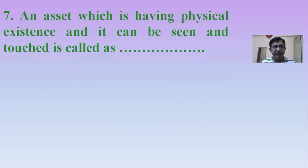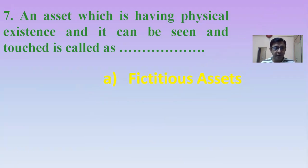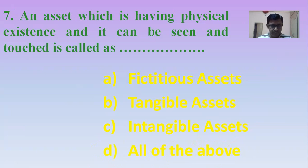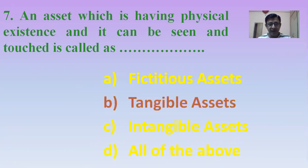Next MCQ: An asset which has physical existence and can be seen and touched is called what? Options: Fictitious assets, Tangible assets, Intangible assets, or All of the above. The right answer is Tangible assets — they have physical existence, can be seen, can be touched, and can be felt.